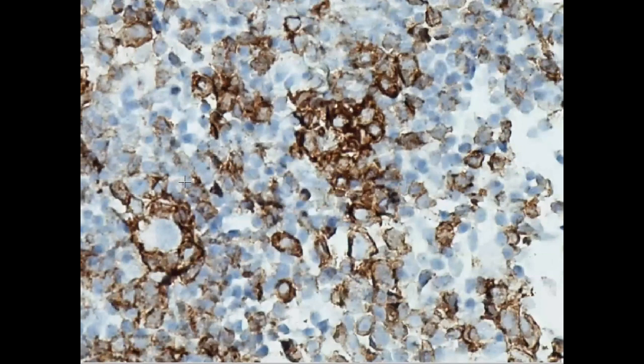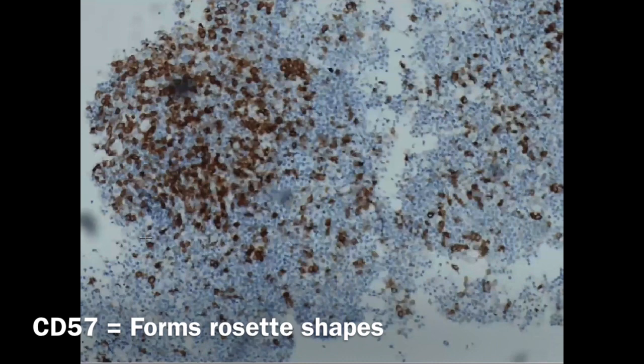Look for this rosette, and look for this rosette also. You can do this with both CD57 and PD1. This is the CD57 and the same rosettes are formed here.